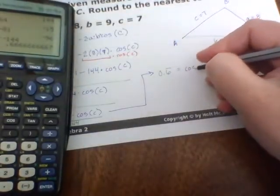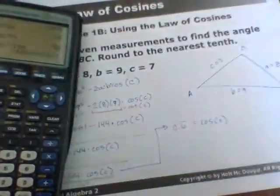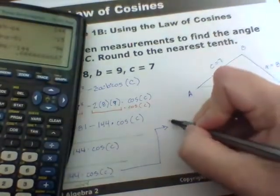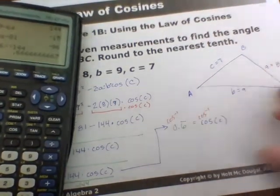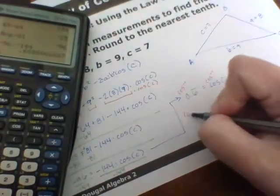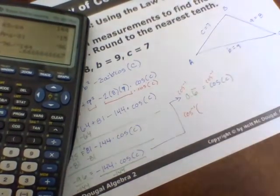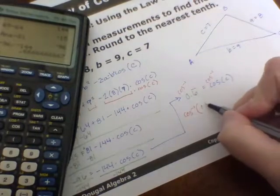So negative 144 divided into negative 96 leaves you with 0.6 repeating. And it still equals cosine of C. But then we need to take the cosine inverse of both sides in order to get C by itself.